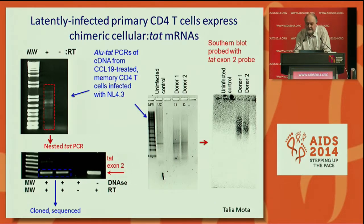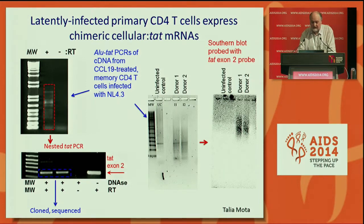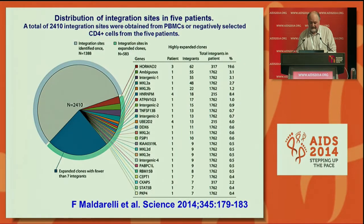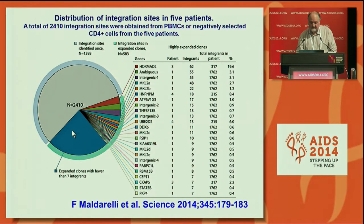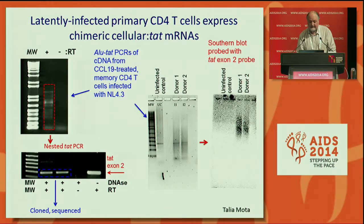To see if this happens in primary cells, we've used the Lewin lab model of primary resting CD4 T cells that are latently infected. Because we don't know where the integration site is in these cells, we've used an ALU-TAT system to try to pick up chimeric messages, which we do using nested PCR and also probing. We've confirmed that these products do in fact contain the TAT exon 2.